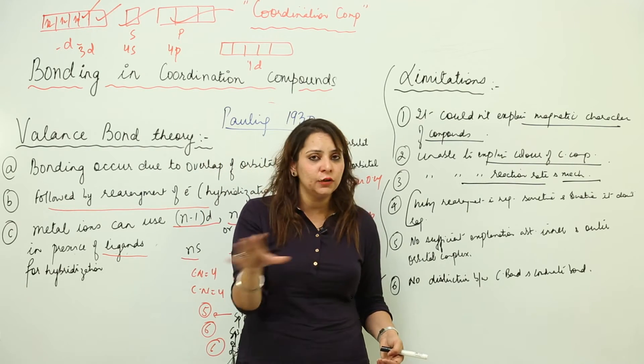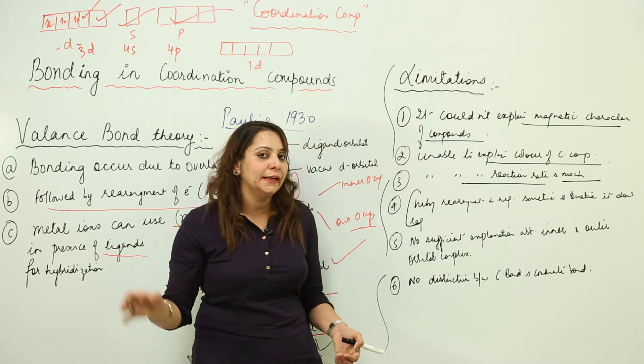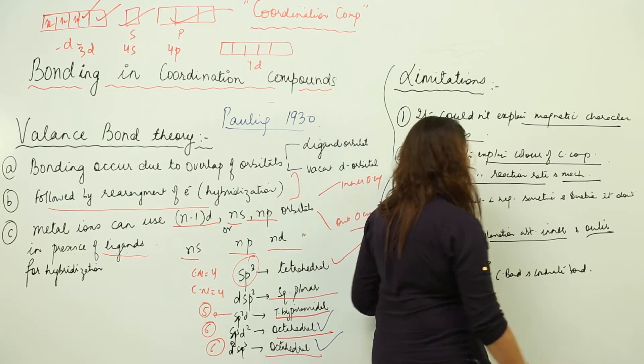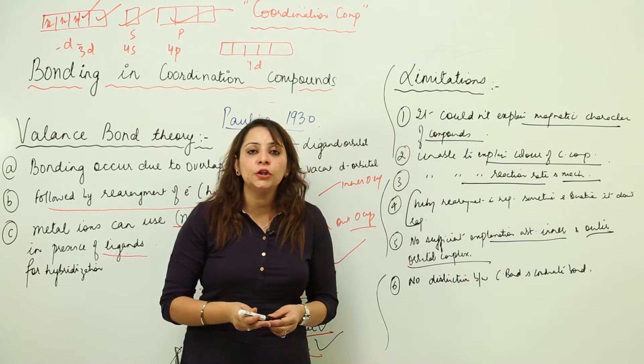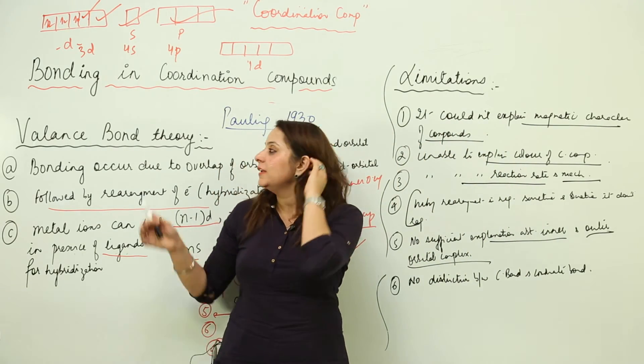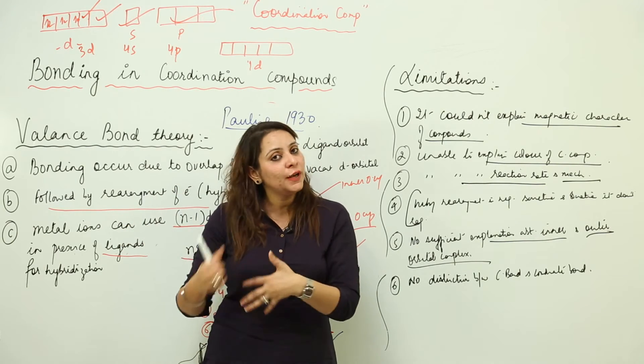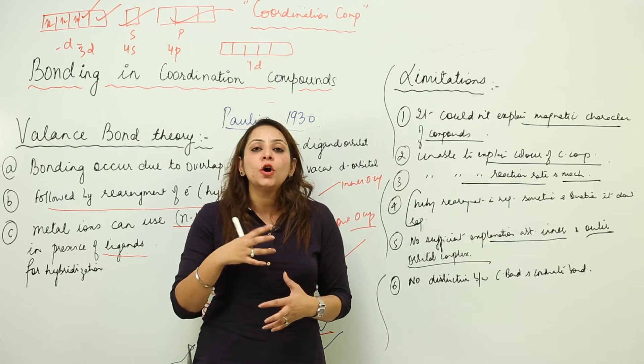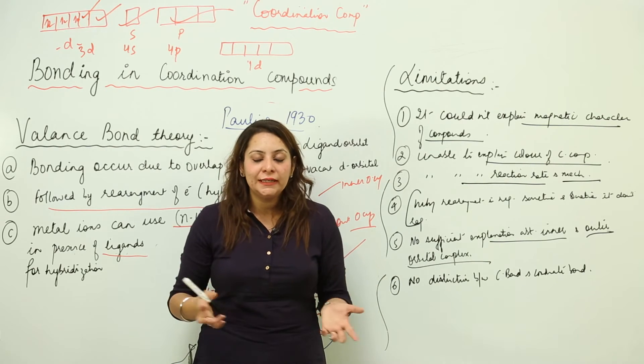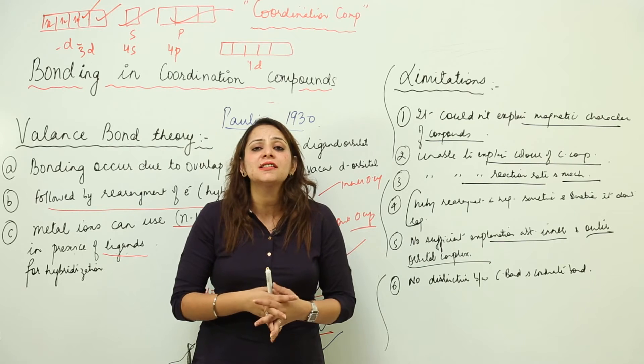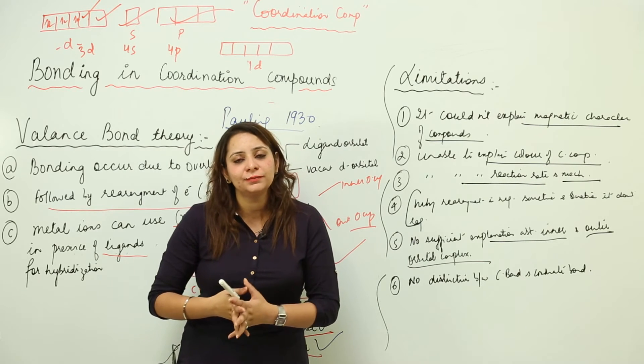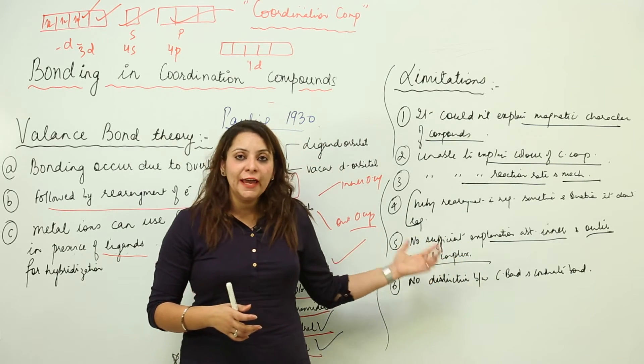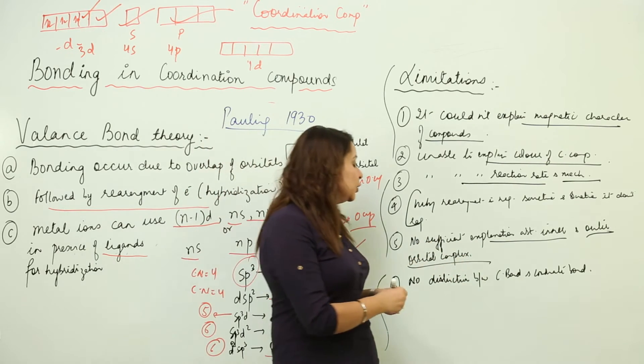As I told you, it can make use of inner orbital complex or outer orbital complex. Pauling tried to explain that by the use of the inner d or the outer d, the complex is going to be classified into two categories—inner or outer. But still there is something lacking in the participation of the orbitals, so again it is a limitation.